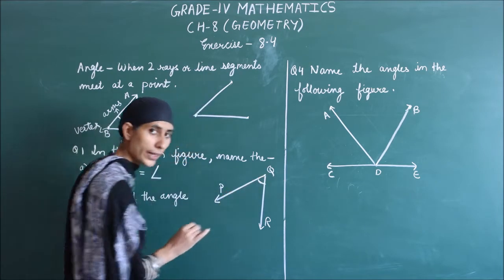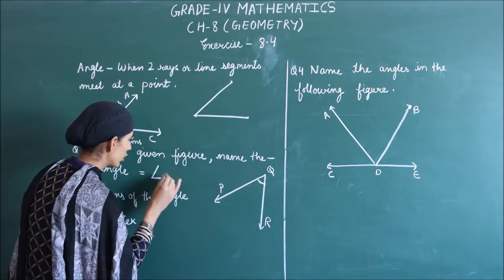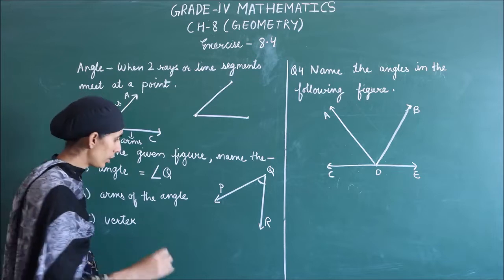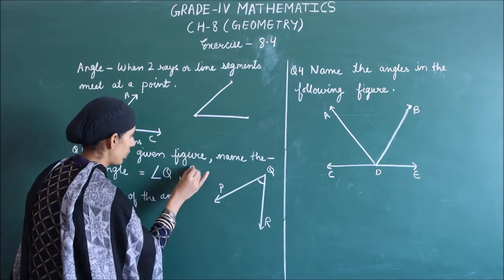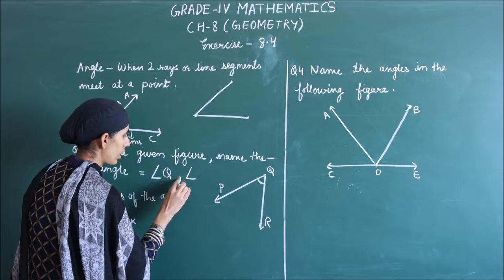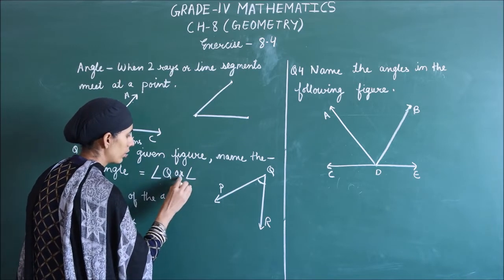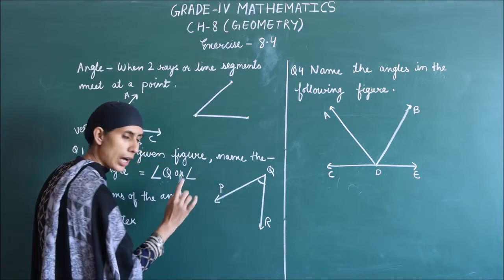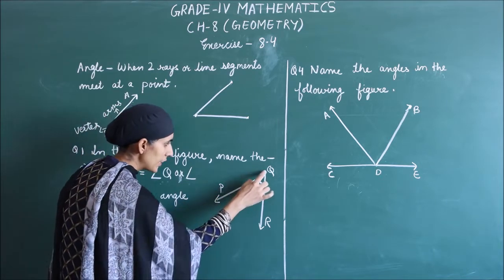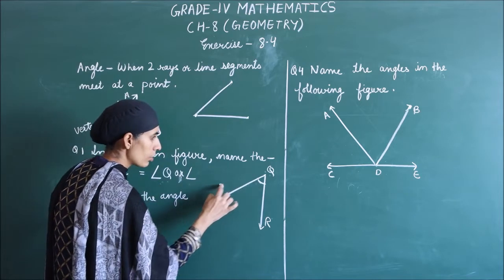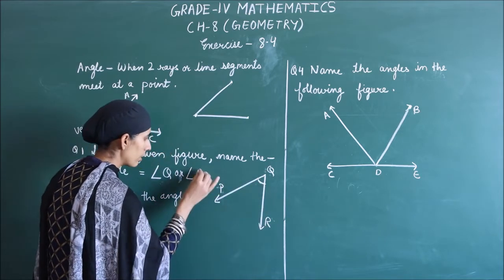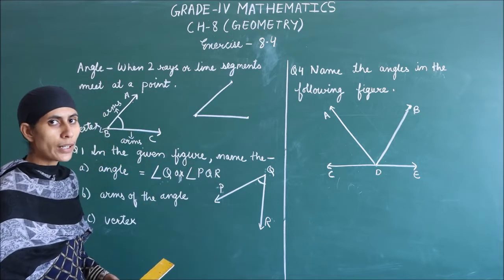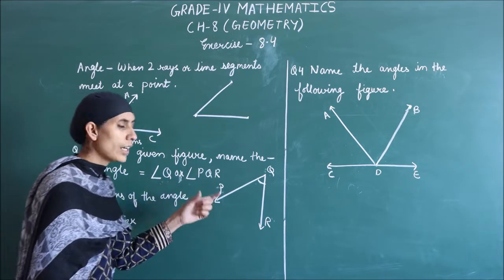So you can write this angle as angle Q, or another way, angle PQR. We can explain the name of angle. We can give the name of angle.